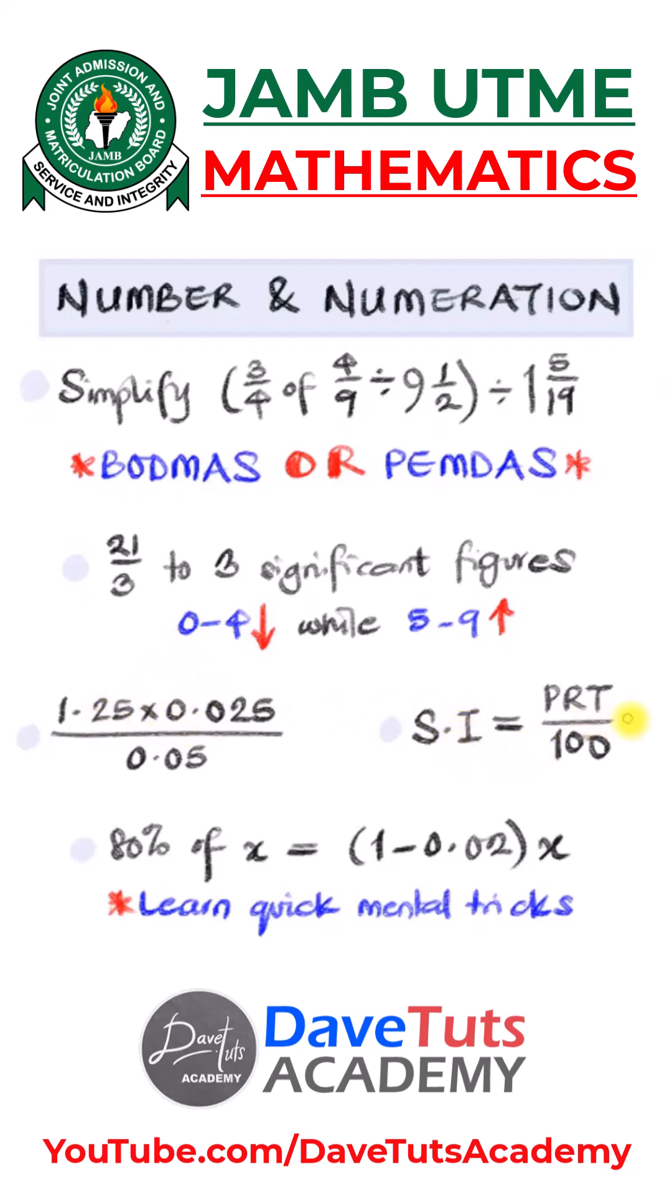You also need to know your simple interest: principal times rate times time over 100. And then there are quick and mental tricks that you need to be able to express percentages. For example, we are being told 80% of X. It's just the same thing as you saying that the O number 1 minus 0.02 multiplied by X and you'll get that straight and direct.